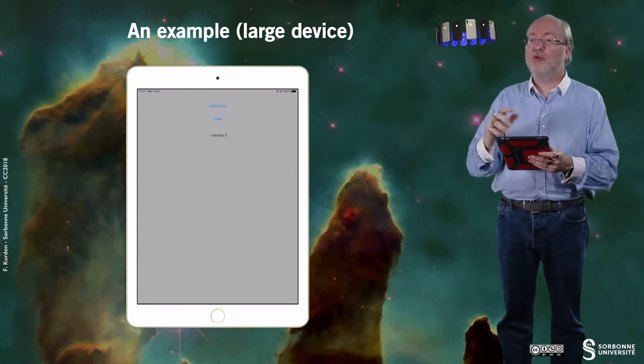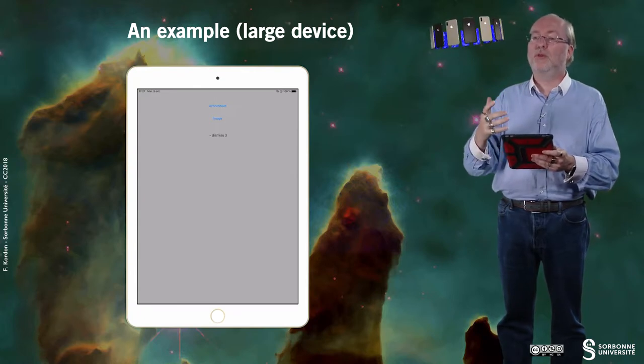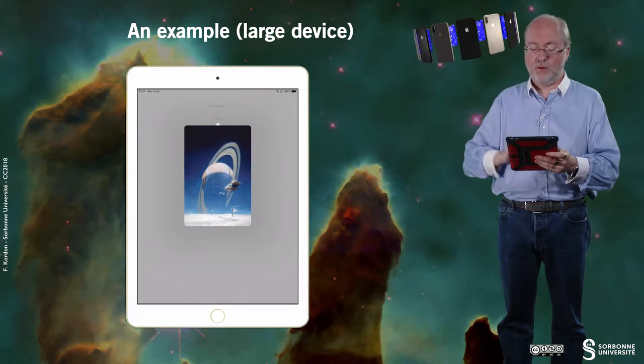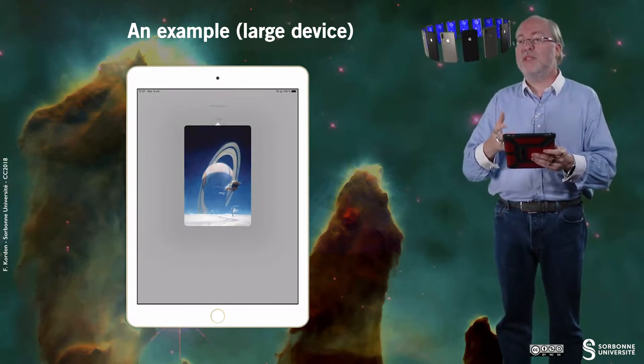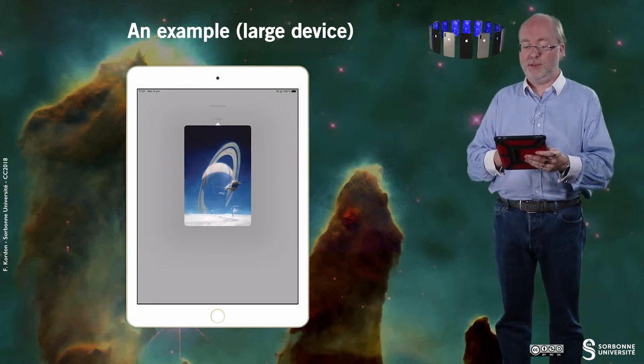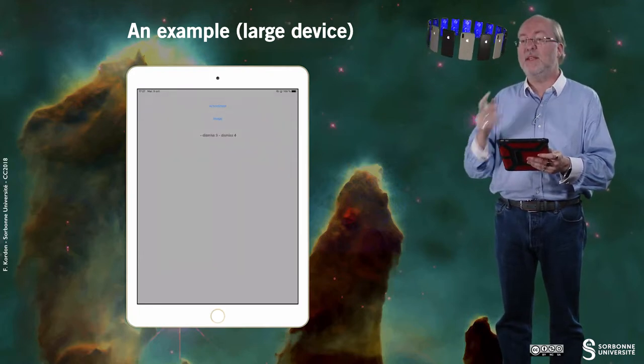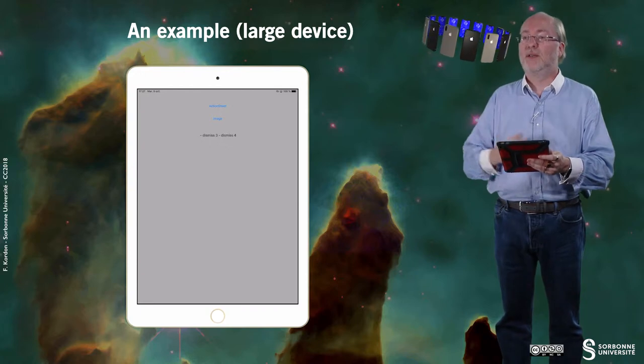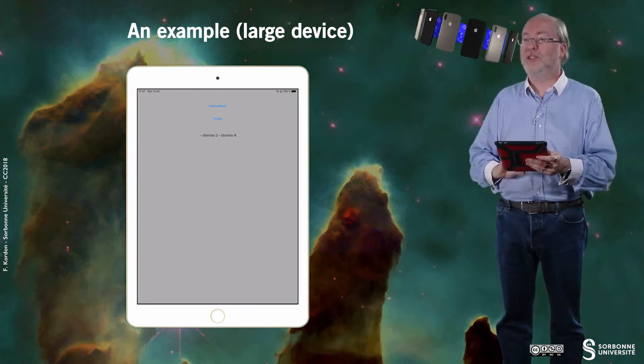The same for the image. Just to show you that you can embed in a popover controller anything. So, here, once again, you see this image that just drops from my screen that way. And once again, if I tap outside the image, it just disappears.